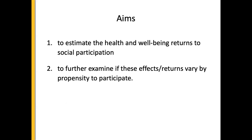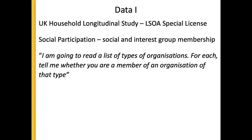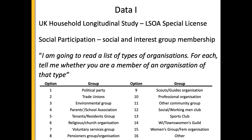We aim to estimate the health and wellbeing returns to social participation, and also whether these effects vary by probability of participating, because we found that socioeconomic status is a predictor of social participation. We use the UK Household Longitudinal Study with the special LSOA licence, which gives us a certain level of geography to identify individuals within the survey. We measure social participation from the social and interest group membership component, where people are asked about what types of organizations they're part of.